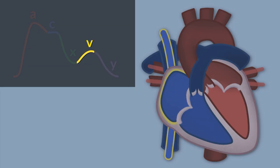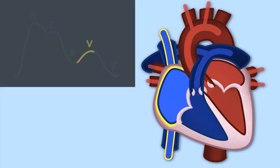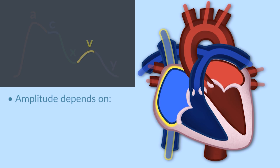The V wave is a normal physiologic wave, and it occurs as a consequence of filling of the right atrium during ventricular systole. So the height of the V wave is going to be totally dependent on the compliance of the right atrium and the volume of blood that is coming back into the right atrium during ventricular systole.